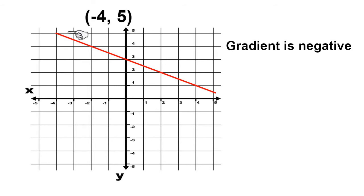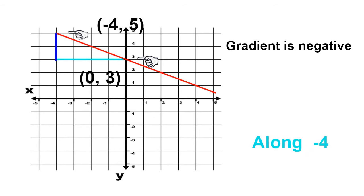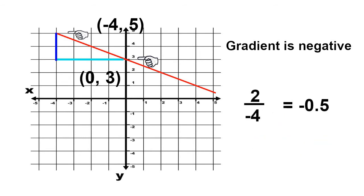I need to pick two sets of coordinates again to work out my gradient. In this instance, I've picked negative 4 as my x-coordinate and 5 as my y-coordinate. And my second set of coordinates, I've picked 0 as my x-coordinate and 3 as my y-coordinate. Looking at the blue line, I've gone along by negative 4 — moving away from 0 to negative 4 — and I've gone up by positive 2. My fraction can be written as 2 divided by negative 4, which equals negative 0.5. My gradient is negative 0.5.